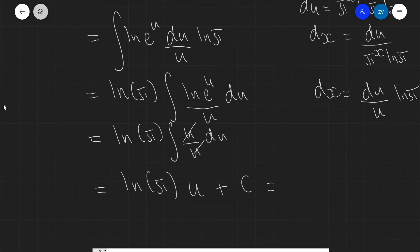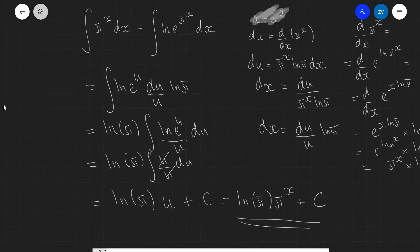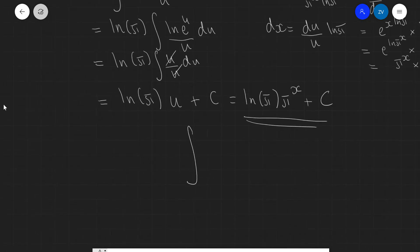So this is equal to 1 over ln π times π^x plus a constant c. And we have actually found our solution. So the integral of π^x dx, should we just write this down over here? The integral of π^x dx is equal to π^x over ln π plus a constant.